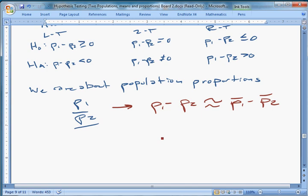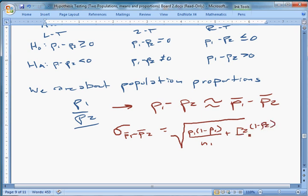Now our standard error for the difference, what you call sigma P bar one minus P bar two, is going to be, yeah, it's this. Square root of P1 times one minus P1 over N1, plus P2 times one minus P2 over N2.